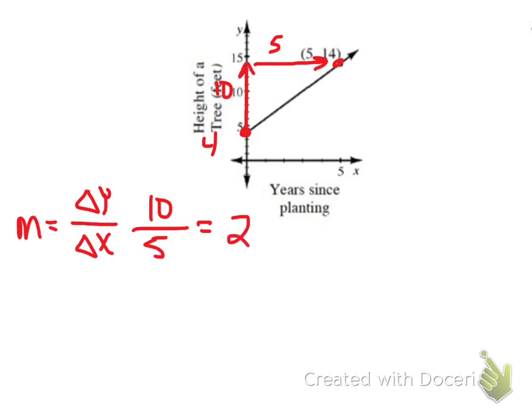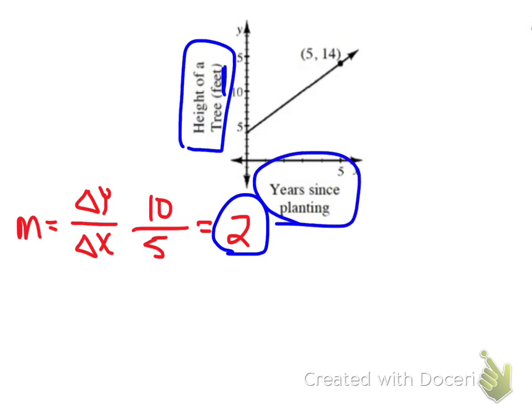So what does this mean for the problem? Once we know that our slope is 2, we are looking at our change in y. The height of the tree is increasing by 2, and that's feet, every year, every one year since planting.